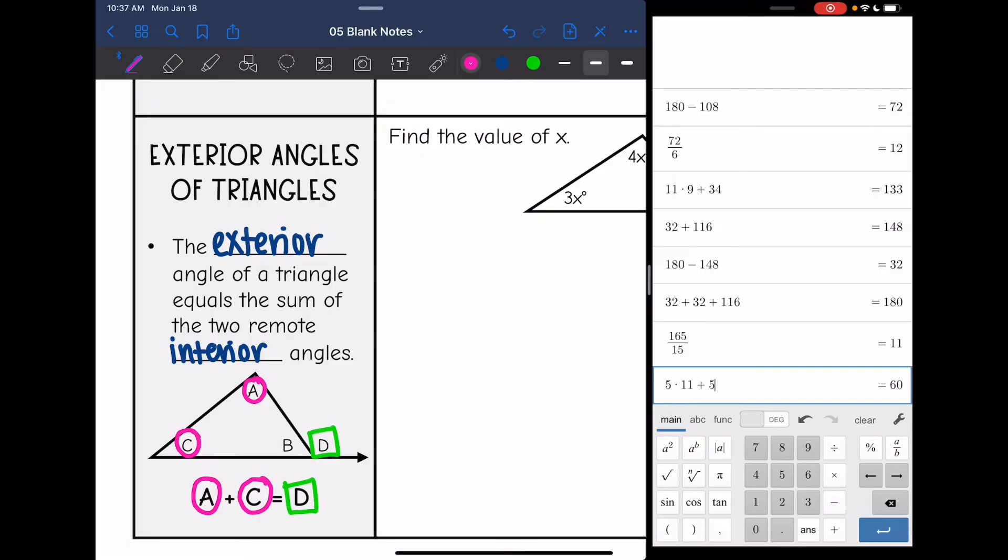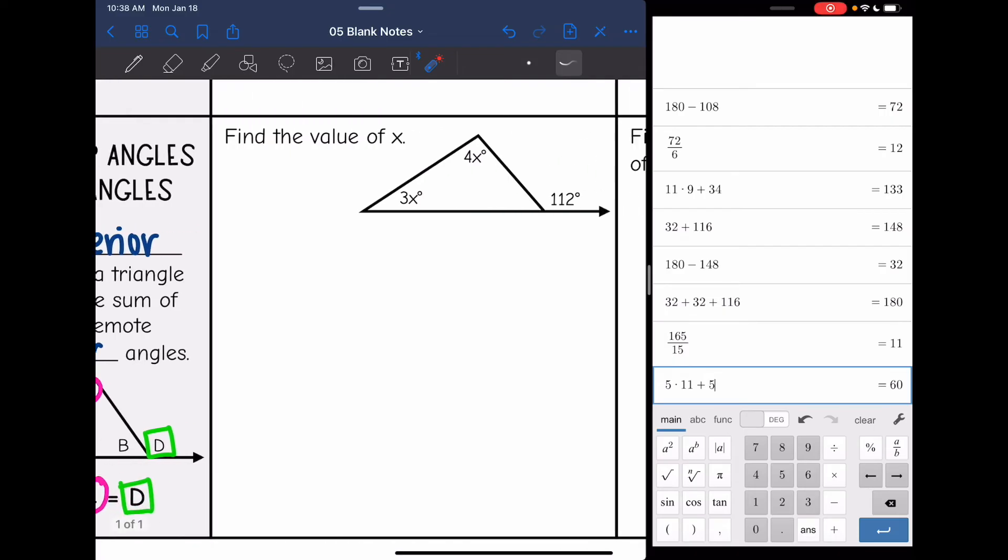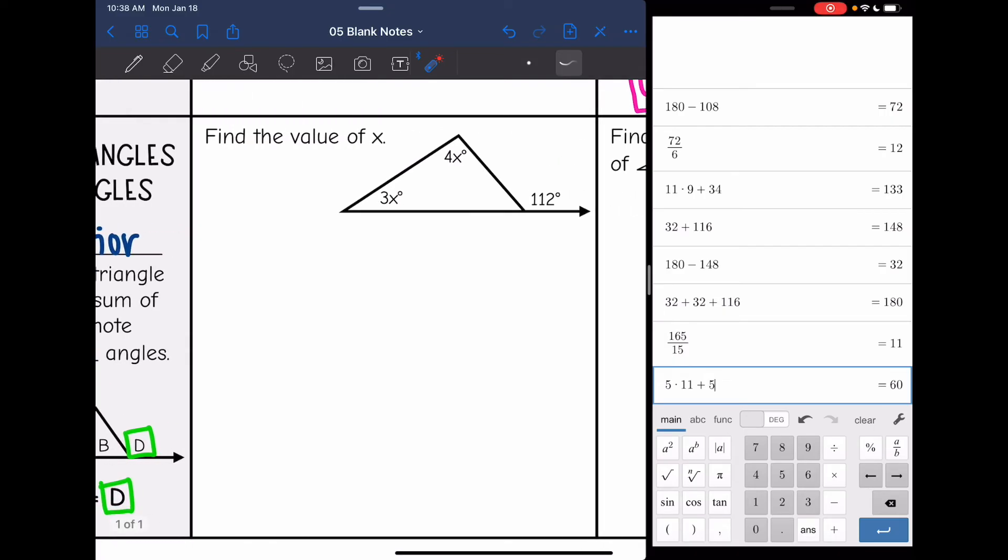The last angle relationship we learned about was exterior angles of triangles. And remember, the exterior angle of our triangle, this would be angle D here, equals the sum of the two remote interior angles, which would be A and C. So 180 is not involved whenever we're setting up our equations here. Some people will want to add everything and set it equal to 180. But that's not what we do with exterior angles. If you see an exterior angle, you set it equal to the two opposite interior angles.